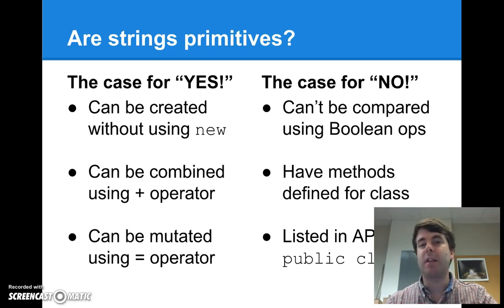And the last, and unfortunately for those of you on the left hand side of the equation, probably the best piece of evidence that strings are not primitives is that they're actually specified in the Java API as a public class. So if you go to the Java API, you can look up public class. It will tell you everything that you want to know about the public class string.